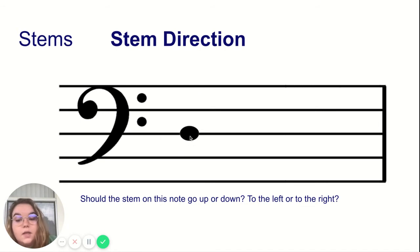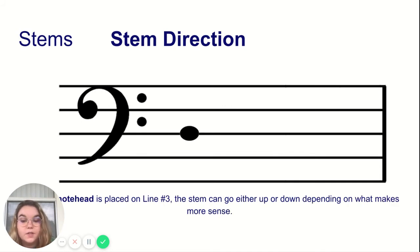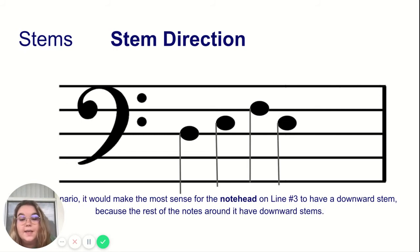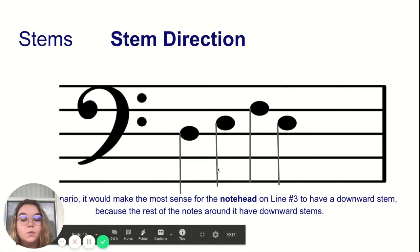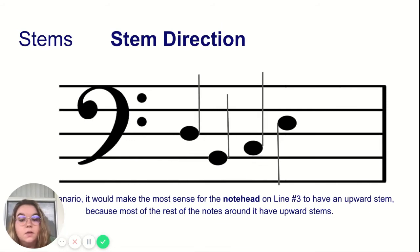This note on line three — should this stem go up or down, to the left or to the right? That's kind of a trick question, because notes on line three can go up or down depending on what makes more sense with the notes around it. Since there are no notes around it, you can't tell. However, in this example where there are notes surrounding it, it makes the most sense for the stem to go down, because the rest of the notes have their stems going down. On the other hand, in this example, the note on line three's stem should go up, because the two notes following it are going up.